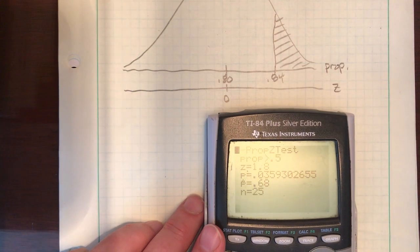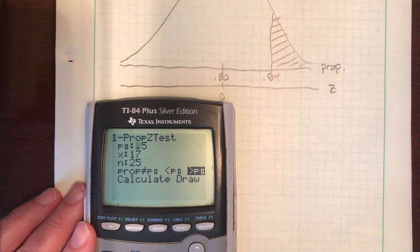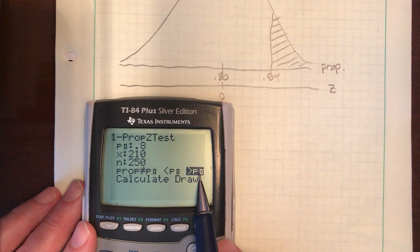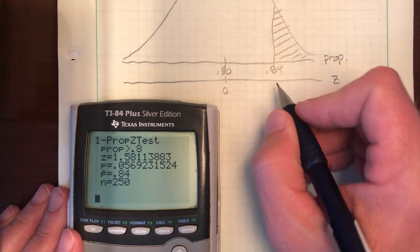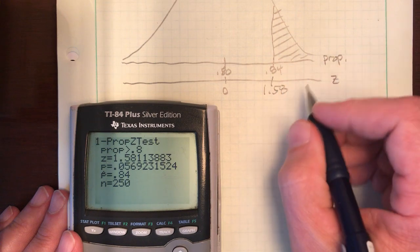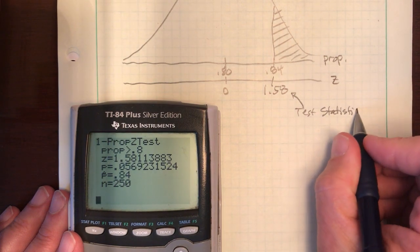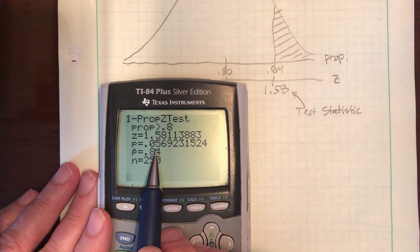So, there's my old one. Clear that out. We've got stat tests, number five, for one Prop Z test. This time, my null, 80%, 0.8. 210 out of 250. My alternative is still greater than, so I don't need to change that. Come down, calculate. So I'll go ahead and put my test statistic, my z-score. I just need two decimals, so how about 1.58, my z-score. I like to remind you that is called the test statistic, or just the z-score. But the number that ultimately matters is this guy, my p-value, 0.0569.